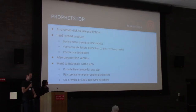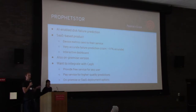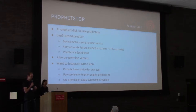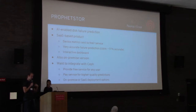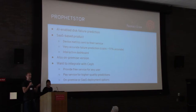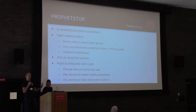About halfway through the project, a company called ProfitStore came along that specializes in AI-enabled data center operations and in particular disk failure prediction. They had a SaaS-based product that collects data metrics from customers and runs a very sophisticated prediction model — they claimed around 97% accuracy — with a dashboard. They were very interested in integrating with Ceph so that Ceph storage clusters could take advantage of their service. Their goal was basically to provide a free service to any Ceph user, and also offer a fee-for-service for paying customers wanting more accurate predictions.